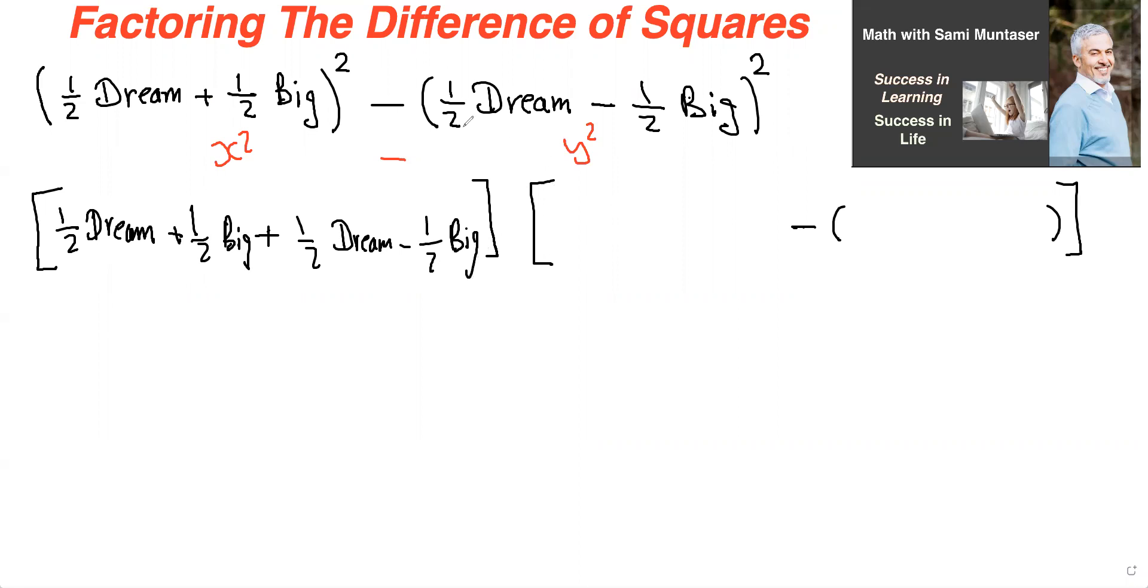And we repeat the same thing in this bracket as well. So x is this. So I'm just going to write that in first, half dream plus half big. And here we have to write y because it's minus. And here we just have to write the y. So we have to put in brackets because of the minus here. So that is half dream minus half dream minus half big.